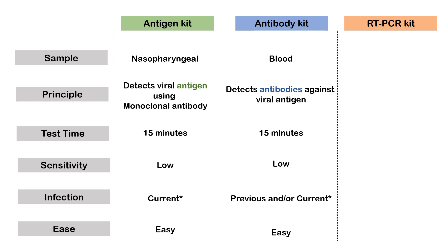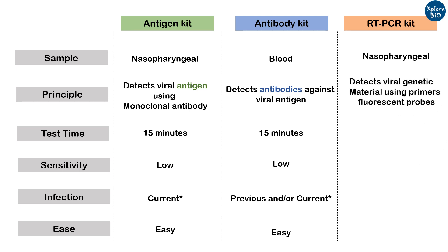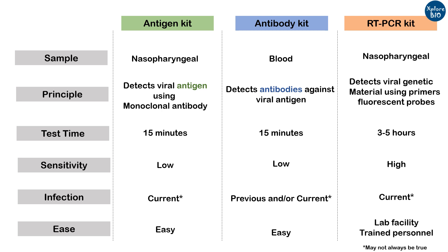Similar to antigen tests, RT-PCR tests are also done with nasopharyngeal swab samples. It is based on PCR amplification of a specific region of viral genetic material using specific primers and fluorescent probes. Results are available in 3 to 5 hours. Sensitivity is very high — minor viral loads can be detected, which is not possible with the other two methods. It tells if the patient is currently infected. Laboratory facilities and skilled personnel are required. Nowadays, antigen tests and RT-PCR tests are very popular and are sometimes combined for more accurate detection.